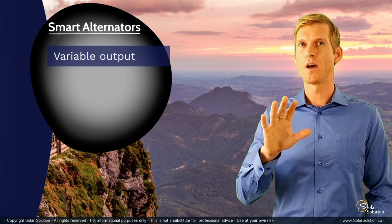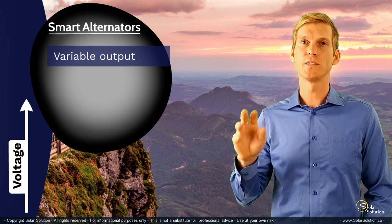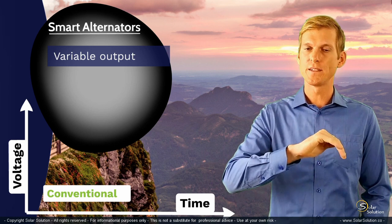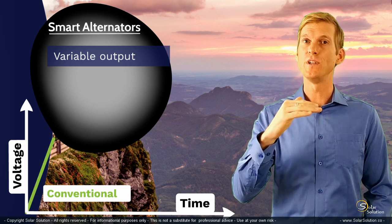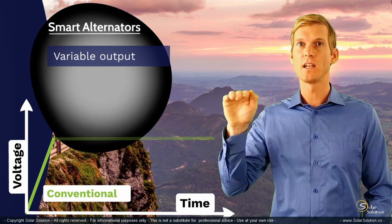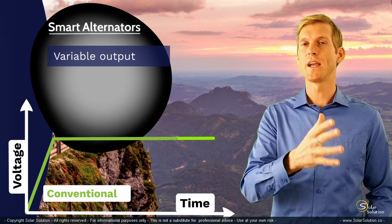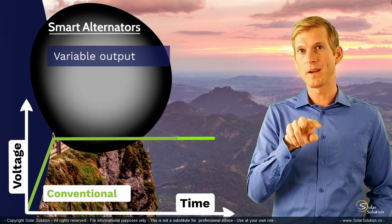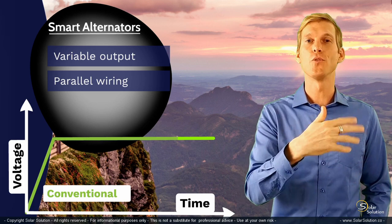Let me explain this with a simple graph. On the vertical axis we have the output voltage of the alternator, and on the horizontal axis we plot time. If you're dealing with a regular conventional alternator, you'll notice that the output voltage slowly increases over time until the alternator reaches its pre-configured output voltage, and then it just continues to maintain the voltage at that level. This kind of charging behavior works well for traditional setups on boats or RVs, where you have two battery banks charged in parallel — one for starting, one for household appliances.